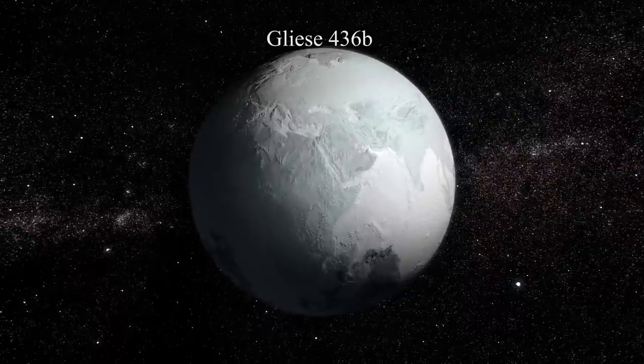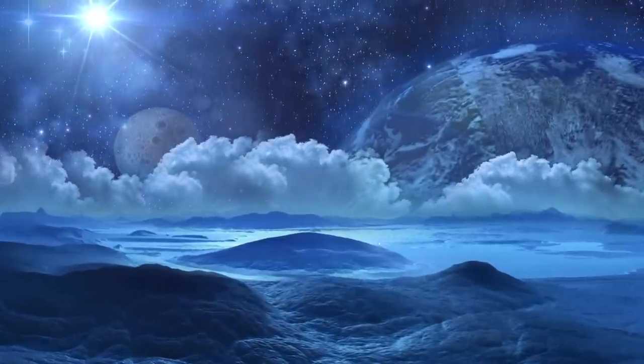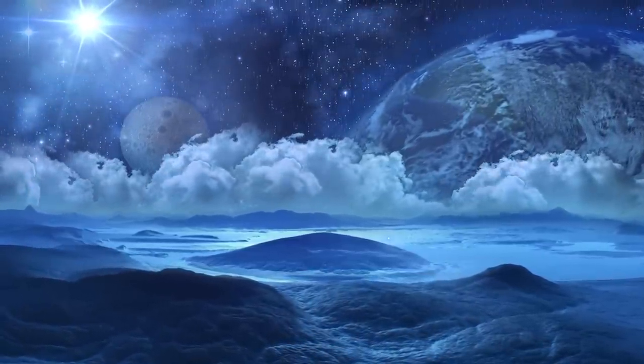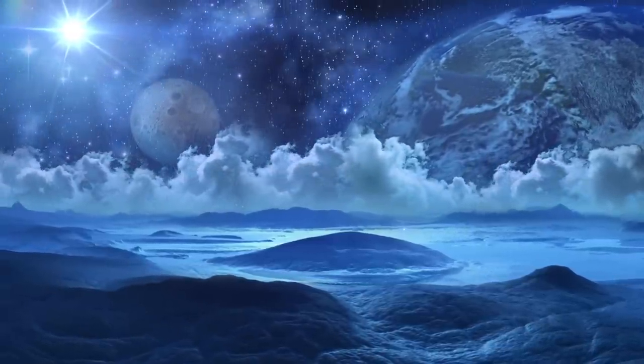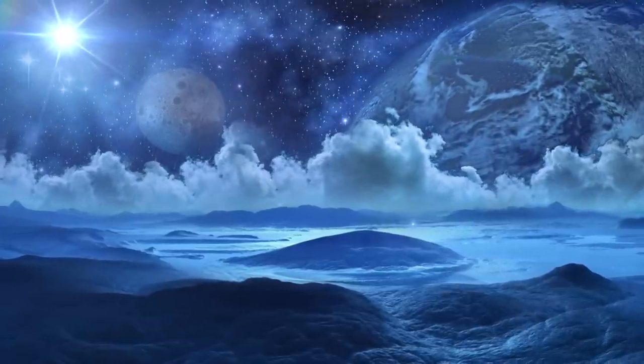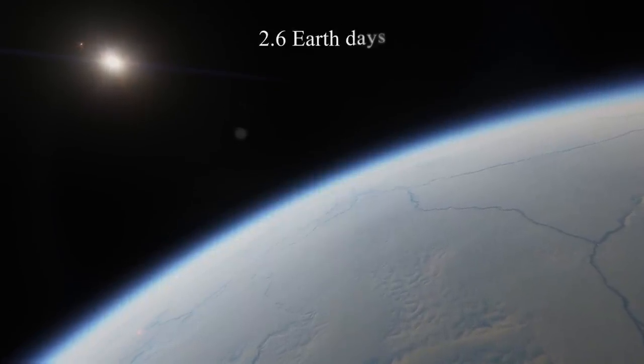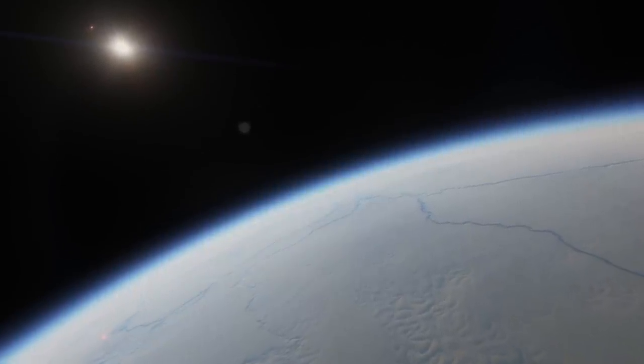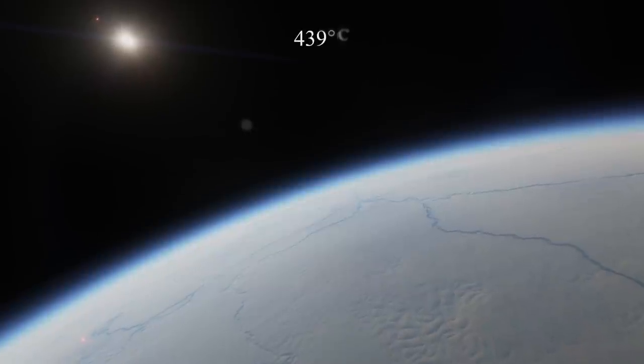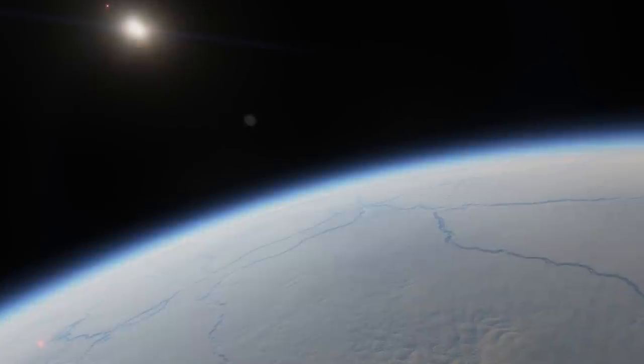Gliese 436 b is a unique exoplanet that has hot ice, which is a form of water that remains solid even at high temperatures due to the extreme pressure on the planet's surface. This is possible because Gliese 436 b has a high surface gravity, which compresses its atmosphere and results in a high pressure environment. The planet is also located very close to its host star, completing an orbit in just 2.6 Earth days. This close proximity has caused the planet's atmosphere to heat up to extreme temperatures of around 439 degrees Celsius, which would normally cause water to evaporate and turn into gas.